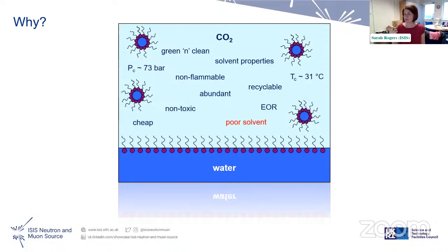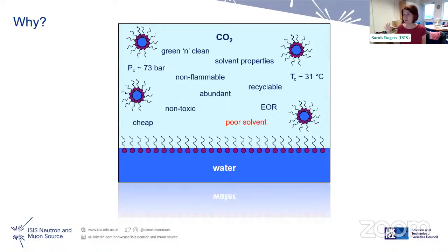In a typical chemical synthesis you use volatile organic chemicals and burn them off at the end, which isn't green. Here the idea is to take CO2 from the atmosphere and compress it — it's seen as green and clean. CO2 has a really accessible supercritical point: 73 bar, 31°C. It's non-flammable, plentiful, recyclable, and cheap. You do your measurement under supercritical conditions, let the pressure off, the product falls out, and you reuse the CO2.